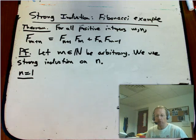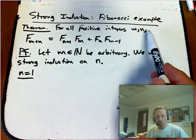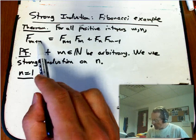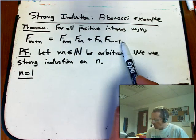Now it's time to prove this claim we have for Fibonacci. So I've stated as a theorem, for all positive integers m and n, f sub m plus n equals f sub n plus 1 times f sub m plus f sub n times f sub m minus 1.